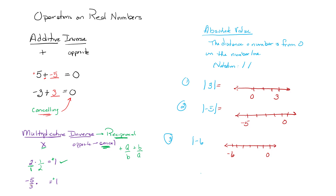Let's look at the next example: negative 5 thirds. The question is, what can I multiply to it so that it cancels out and I end up with a positive 1? Remember, they're asking us to find the reciprocal. The reciprocal is going to be negative, and I flip it over to get negative 3 over 5. When I multiply negative 5 over 3 by negative 3 over 5, they cancel out to a positive 1.